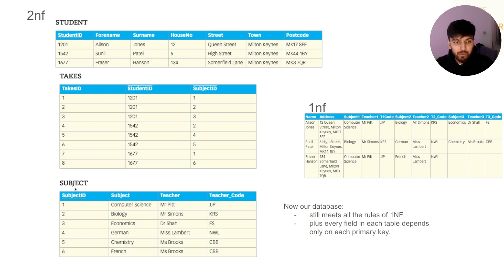We also create a subject table with all the subjects and related things in one table. Now our database still meets all the rules of First Normal Form, plus every field in each table depends only on each primary key.